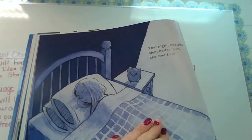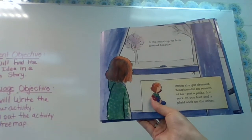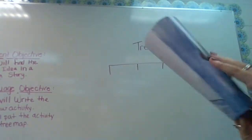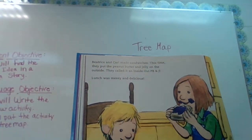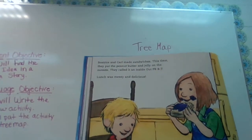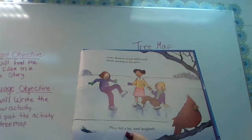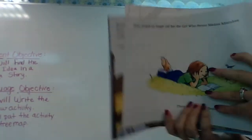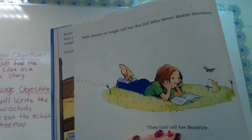That night, Beatrice slept better than she ever had. In the morning, no fans greeted Beatrice. When she got dressed, Beatrice — for no reason at all — put a polka-dotted sock on one foot and a plaid sock on the other. Beatrice and Carl made sandwiches. This time they put the peanut butter and jelly on the outside. They called it an Inside Out PB&J. Lunch was messy and delicious. Later, Beatrice found Millie and Sarah skating in the park. They fell a lot and laughed. Now, people no longer called her the girl who never made mistakes. They just called her Beatrice.